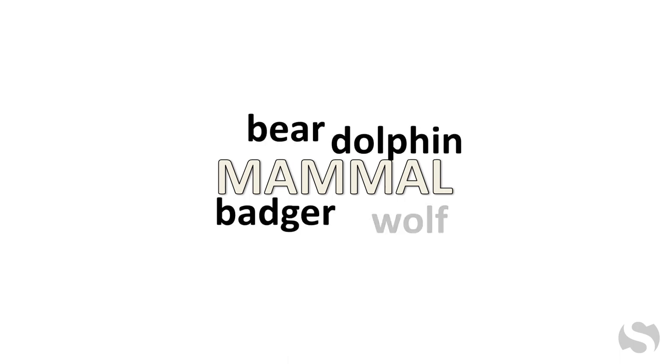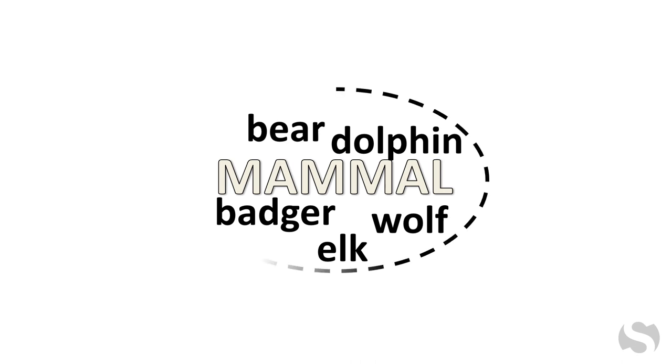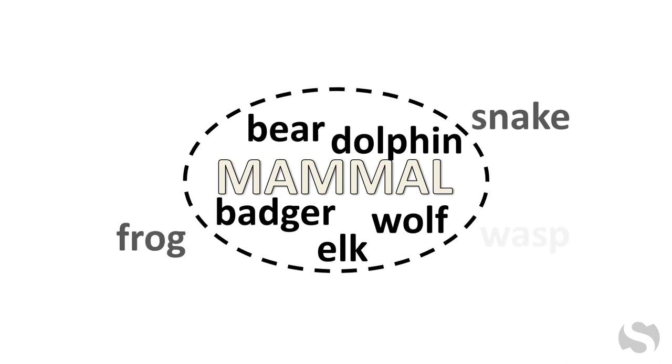A prevalent concept students learn about early on is mammal. Critical features of mammals include warm-bloodedness and milk-producing glands. Knowing these critical features enables grouping animals into the mammal category or concept, and distinguishing them from non-mammals.